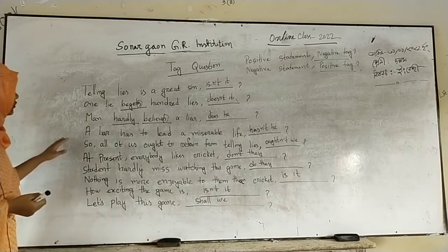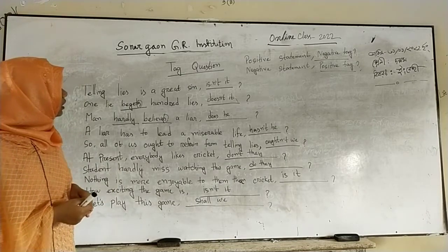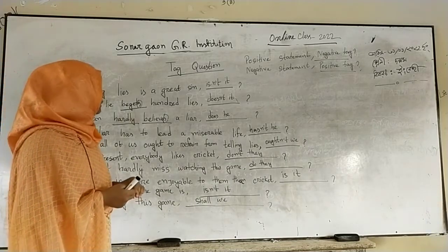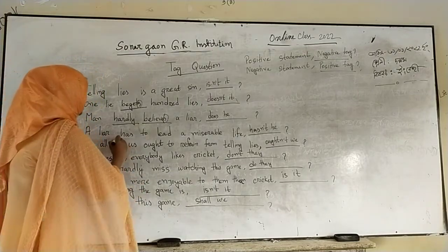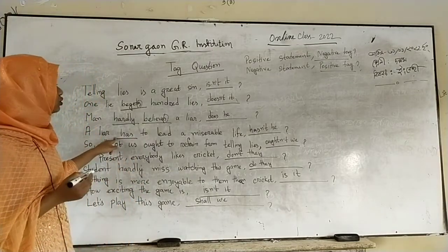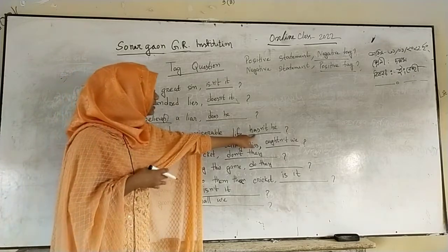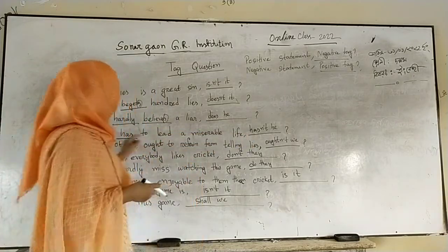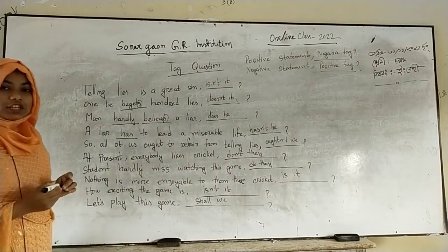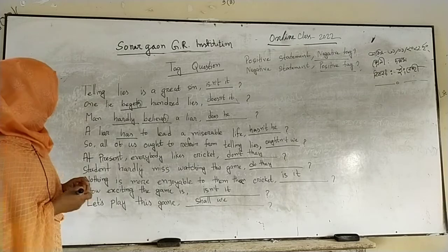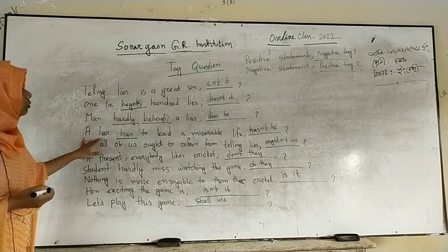Step 6: A liar has to lead a miserable lie. અhané হছে — এমাদার verb-এ 'has' শেজনো হছে। আমারা tag-এ verb-এর জায়গায় 'has' দিয়ে দিবো আছে। শেজনো 'has'-এর সাথে 'not' যুক্ত করে দিবো — এভোং 'a liar has not,' মিথা বাধী কে।